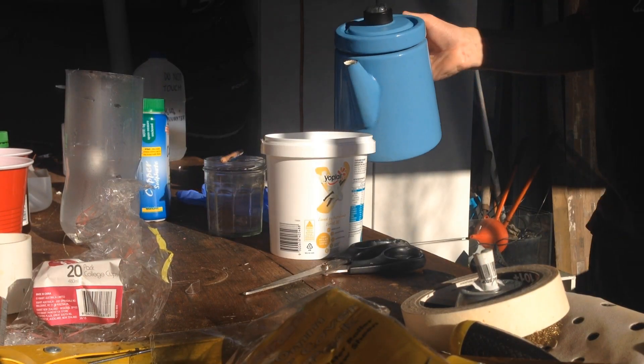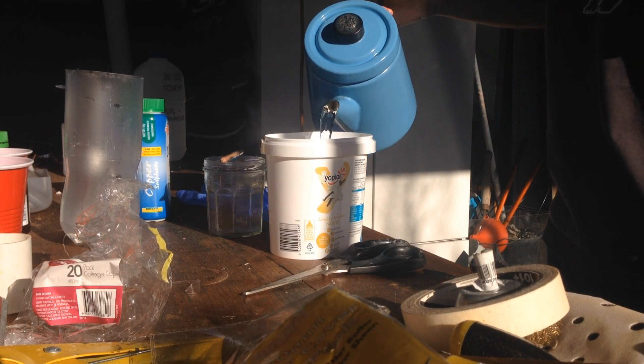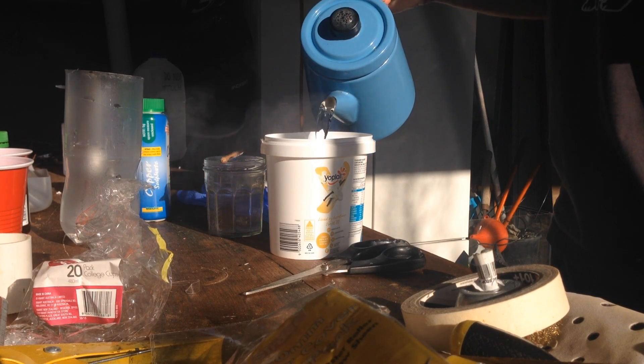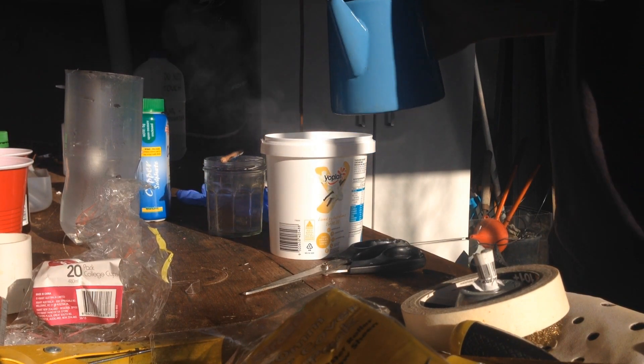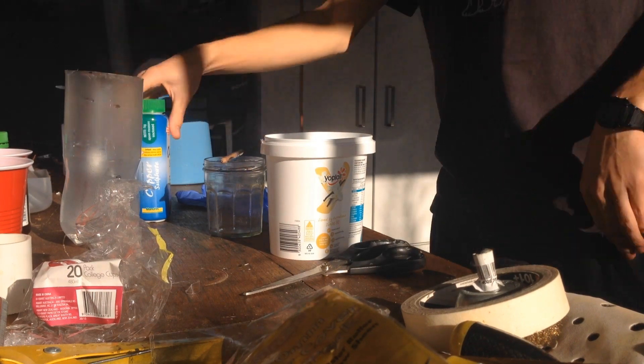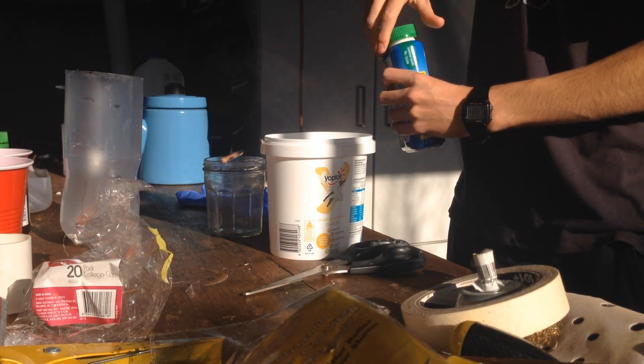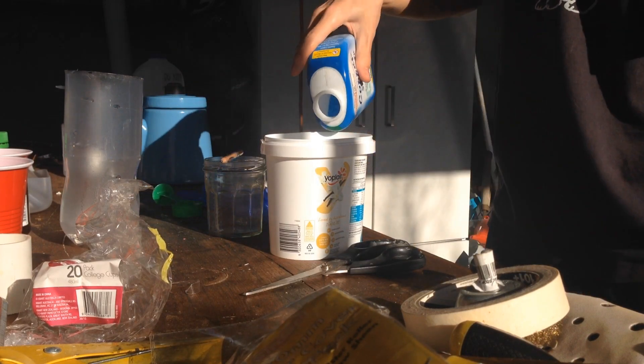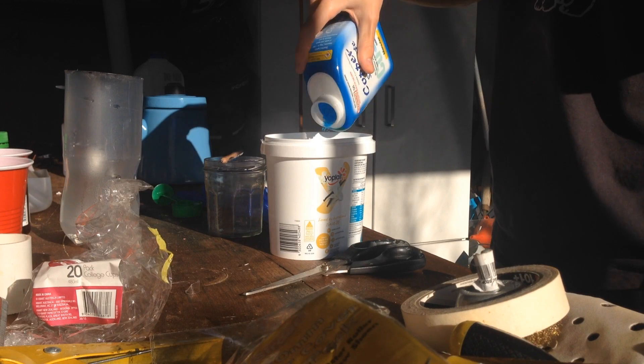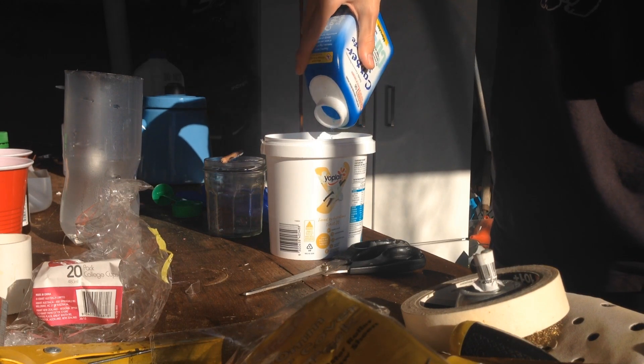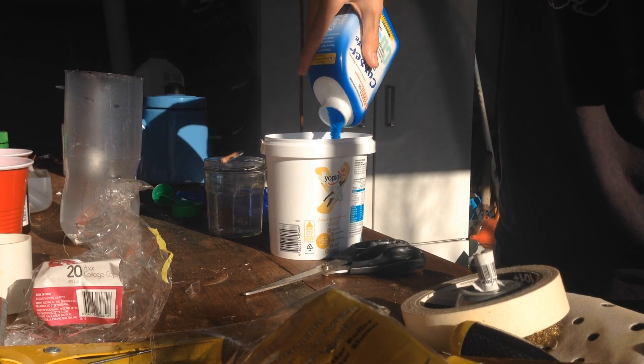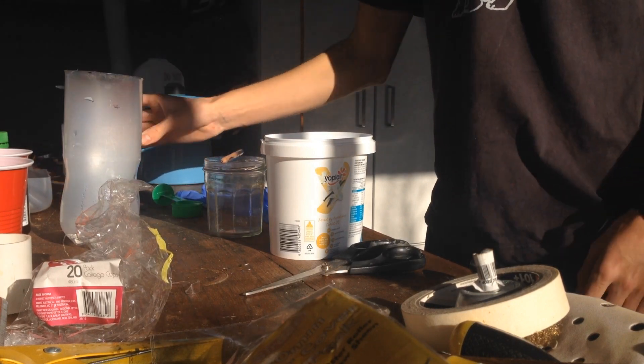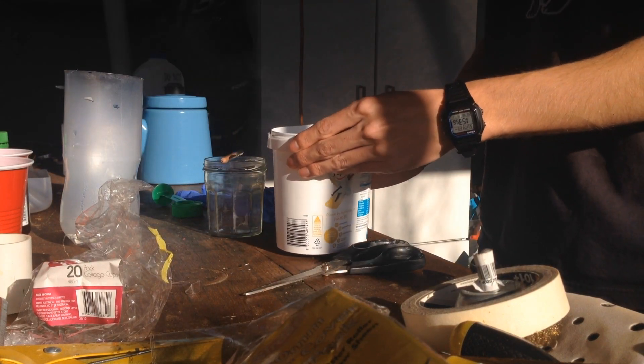So you're going to get your boiling water and pour it into the container that isn't your glass jar, a fair bit of it, then get your copper sulfate and pour a fair bit in, and then try to dissolve all of it.